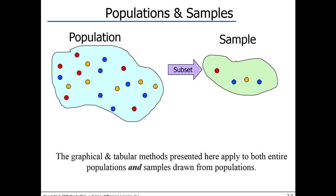The techniques we're going to discuss in this chapter cover really only two different charts. For numerical data, we'll look at histogram. For non-numerical, categorical data, we'll look at bar chart. These techniques apply equally to population or sample — it doesn't matter. The histogram doesn't care how much data you have; whether it's a small sample or the entire population, the principles and plotting method are the same.